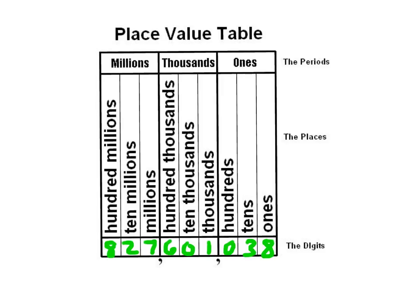What digit is in the 100,000s place? Obviously the 6. What digit is in the 10,000,000s place? The 2. What is this 8 worth in the number? It's worth 800,000,000. Using a place value table really helps you understand a little bit more about the number. What digits are in the millions period? This is the millions period, so we have the digits 827.